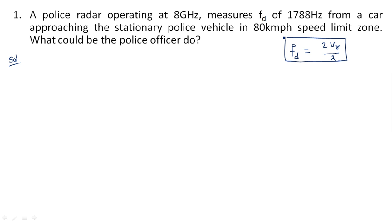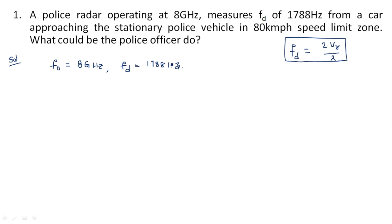Now here is the first problem — a police radar is operating at 8 GHz, so the operating frequency is 8 GHz. The measured Doppler frequency component fd is given as 1788 Hz.